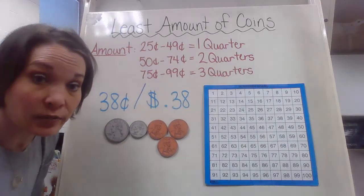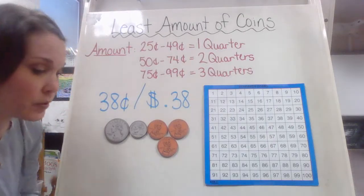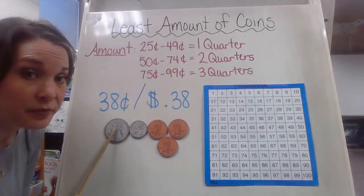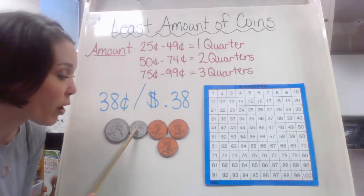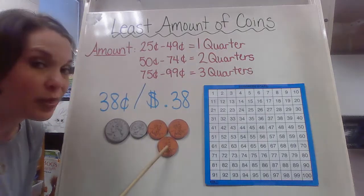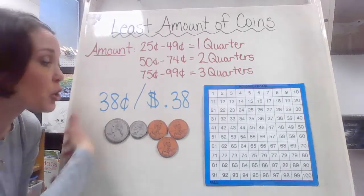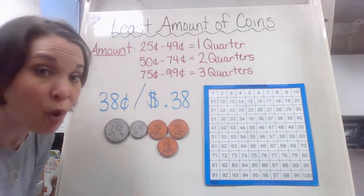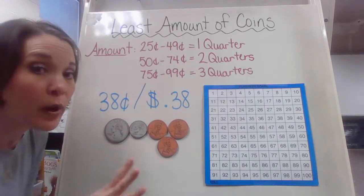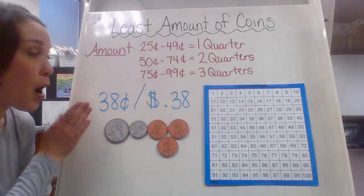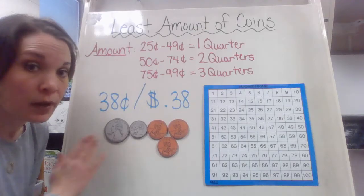Let's go ahead and count it the best way we can using those values: 25, 10 more is 35, and then three more is 36, 37, 38. So just because you have an amount doesn't mean you'll use every single type of coin. This is going to be the least amount — I used all the coins necessary to get me from 25 cents to 38.